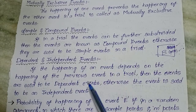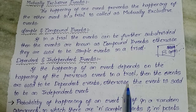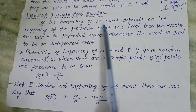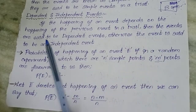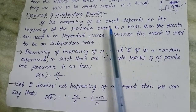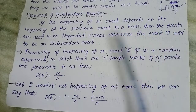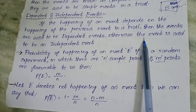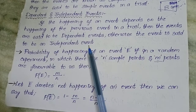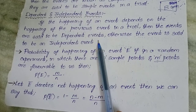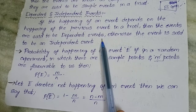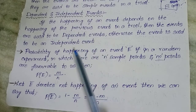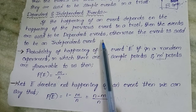Dependent and independent events. If the happening of an event depends on the happening of the previous event in a trial, then the events are said to be dependent events. Otherwise, the event is said to be an independent event. Dependent event means it will depend on other events — the past events. Independent event means it will not depend on any other event.